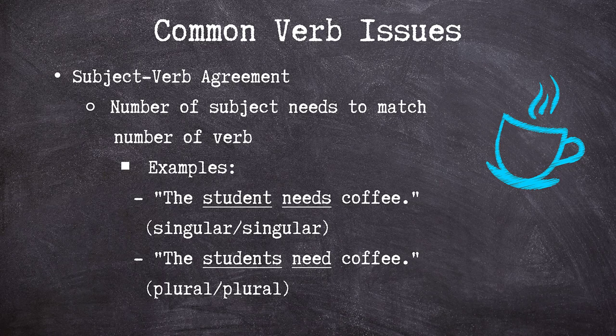Finally, we'll touch on common verb issues. The most common verb issue outside of tense that we see here in the Writing Center is subject-verb agreement. Subject-verb agreement is the concept that the number of the subject — whether it's singular or plural — needs to match the number of the verb. In our first sentence, 'the student needs coffee,' our subject 'student' is singular, so we use the singular form of the verb 'to need,' which is 'needs.' In our second example, 'the students need coffee,' students is plural, so we use the plural form of the verb, 'need.'